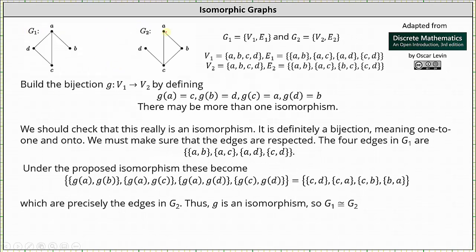So analyzing the graphs of G1 and G2, notice the vertex A in G1 matches up with vertex C in G2. Vertex B in G1 matches up with vertex D in G2. Vertex C in G1 matches up with vertex A in G2. And vertex D in G1 matches up with vertex B in G2.